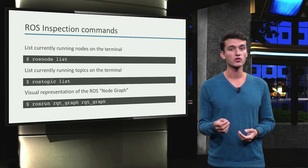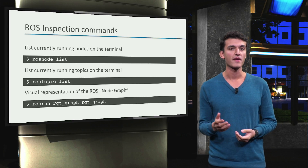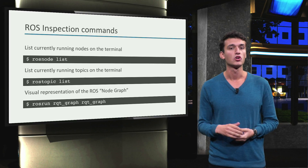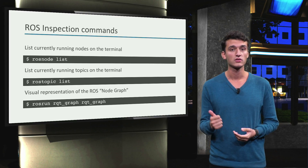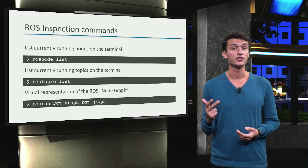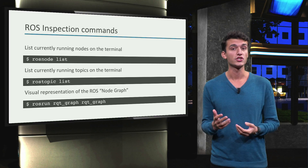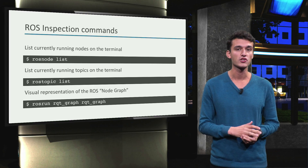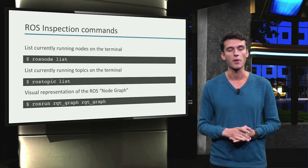To inspect the running application we have several commands, such as rosnode list, rostopic list, and the RQT graph, which is used to give a visual representation of all nodes and topics.